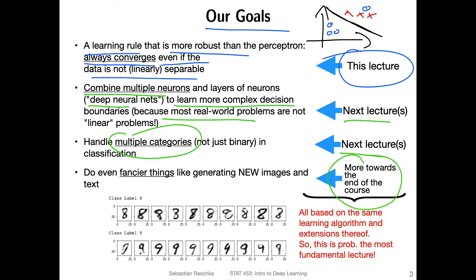And more towards the end of the course, we will learn how to do fancier things, not just classification, but also things like generating new images and new text. All these types of things are based on the same learning algorithm and extensions of this learning algorithm. It's not fundamentally different though. And in this lecture here, we will learn the core principle of this learning algorithm that we will be using for the rest of the semester.